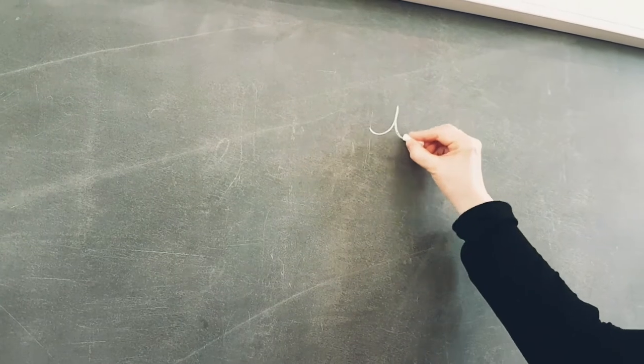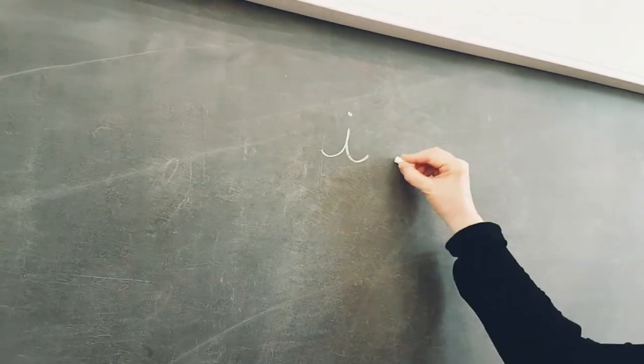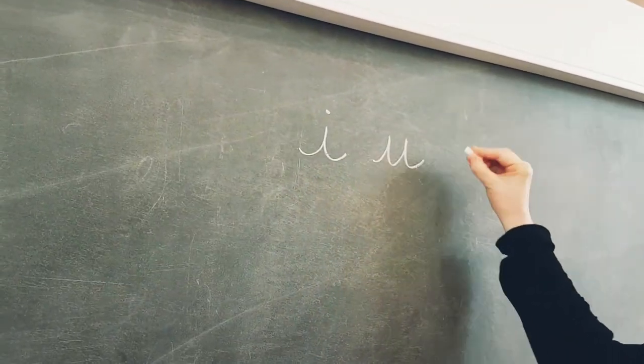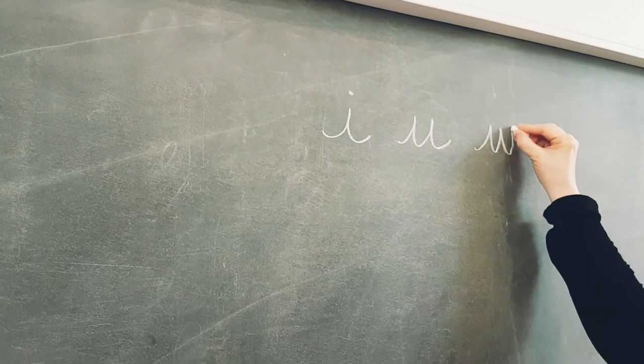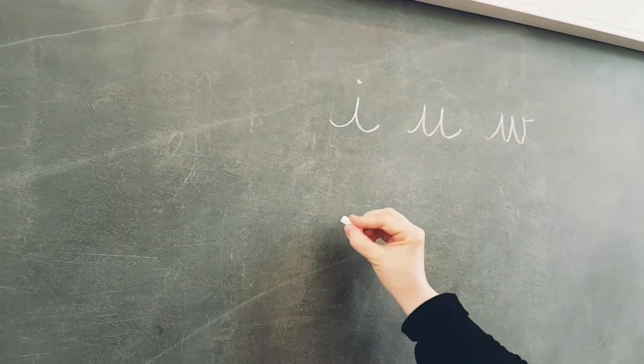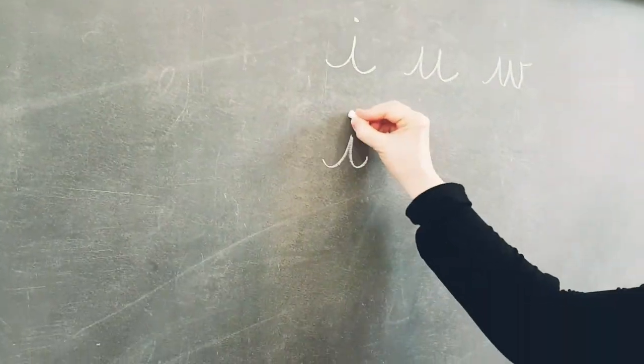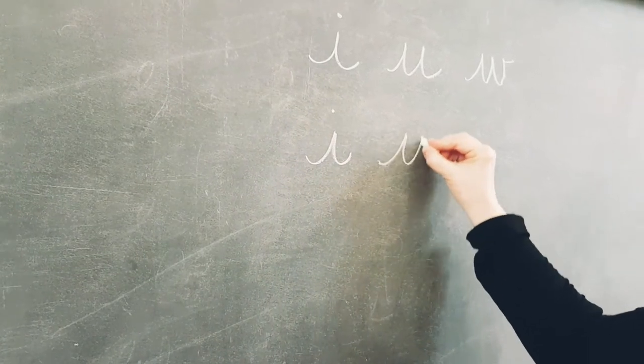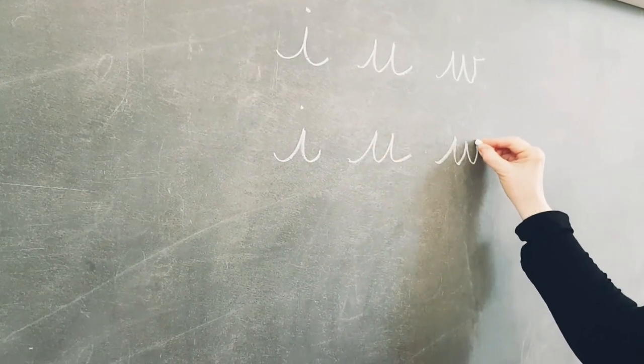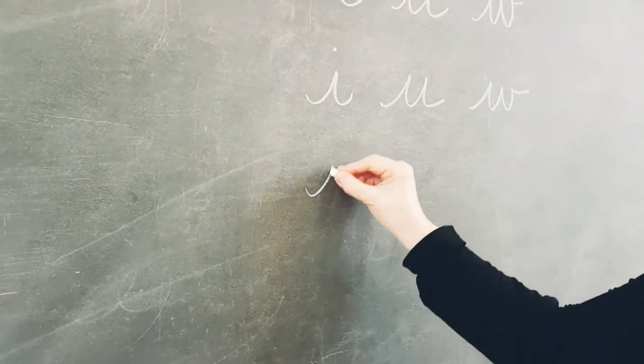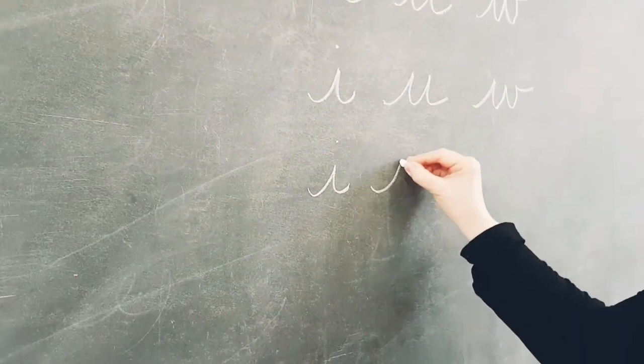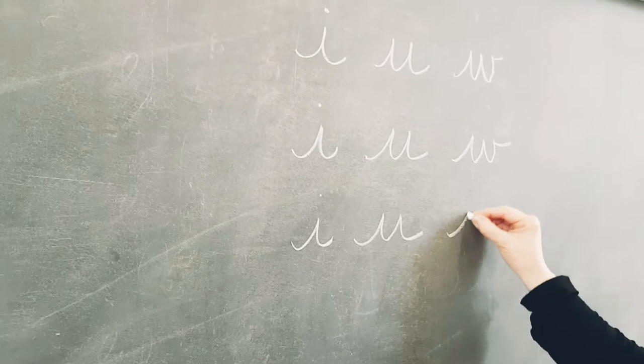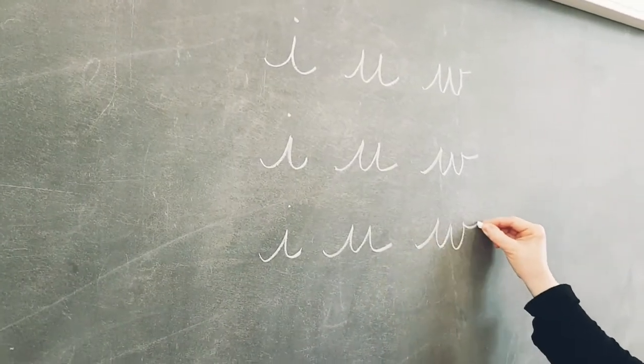So the first letters we're going to be starting with today are I, U, and W. Again, like the letters last week, they're fairly similar to their printed counterparts. You just need to be careful at the difference between the U and the W, because when writing them together, they can kind of blend in. Remember, practice makes perfect, so keep repeating the letters over and over again until you get them right.